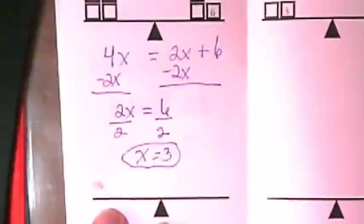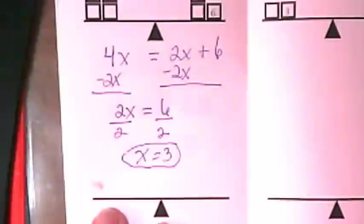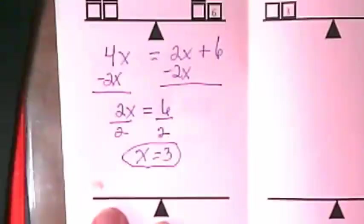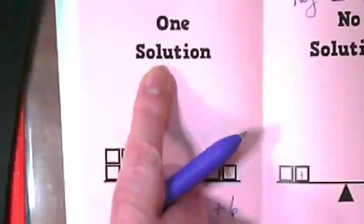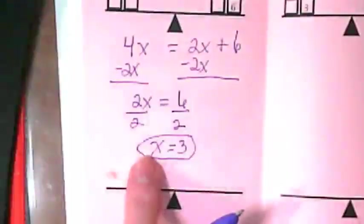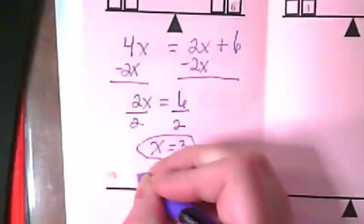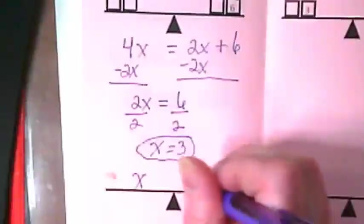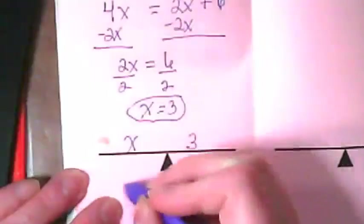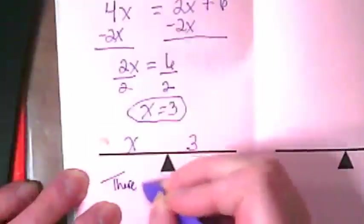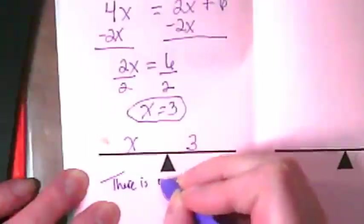This is a pretty typical equation. Most of the equations that we work on in Algebra 1 end up with your variable equaling a number. That is one solution. Our variable is there. It equals 3. That means X is equal to 3. And here's where the notes really come in. And there is only one solution.